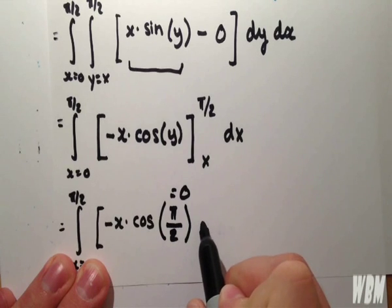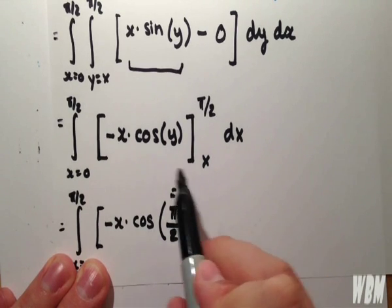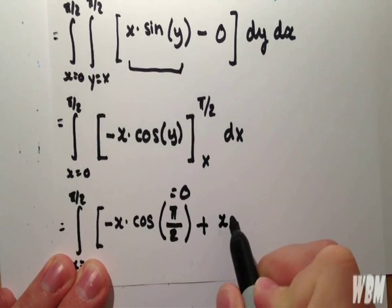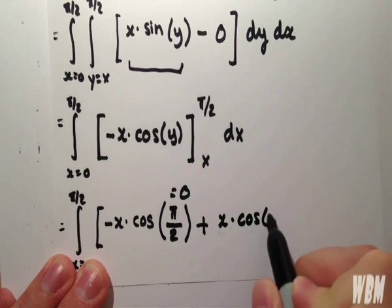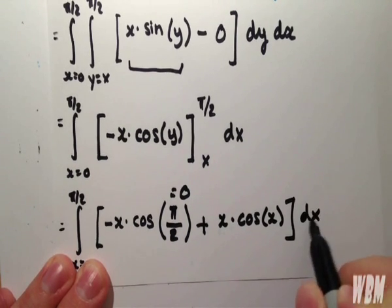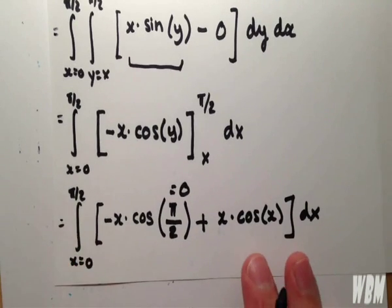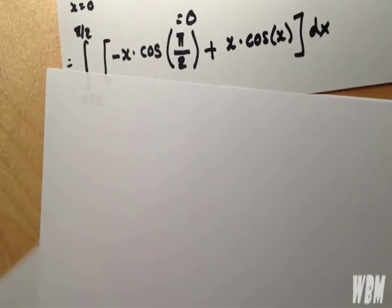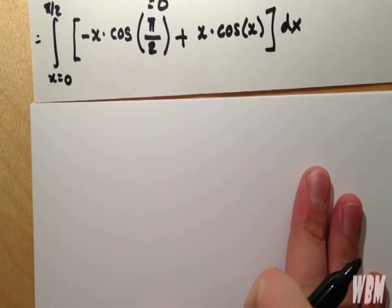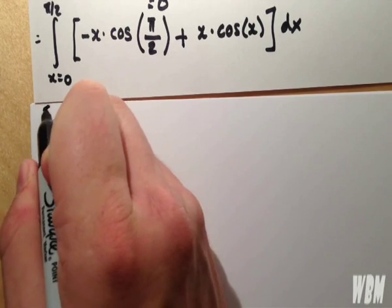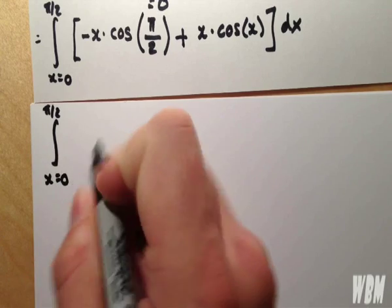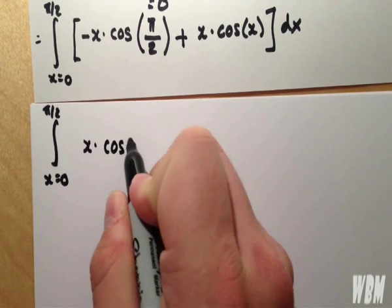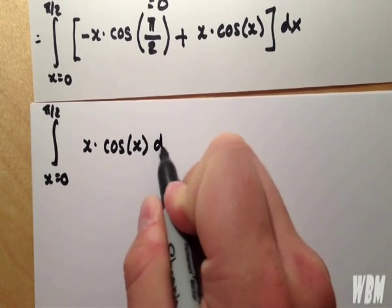And we see that cos of pi over 2 is equal to 0, minus minus, so that becomes plus x cos x dx. So this bit becomes 0, and we're left with x cos x dx.